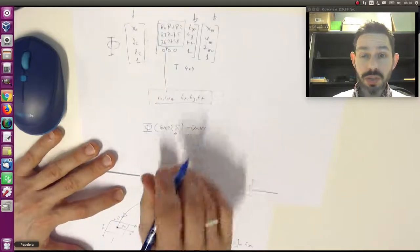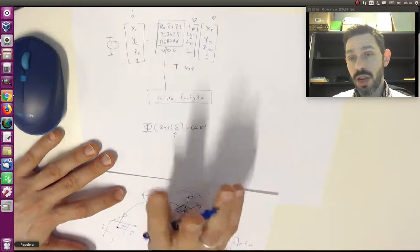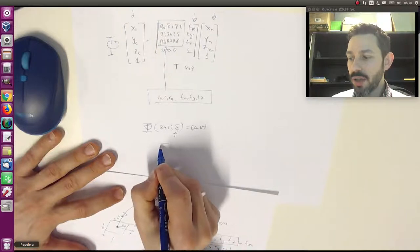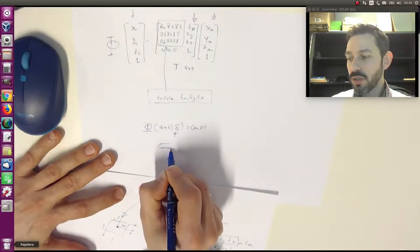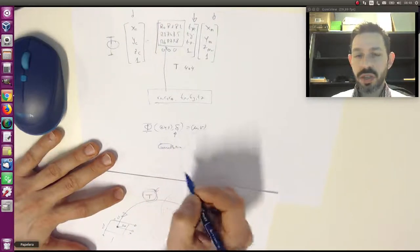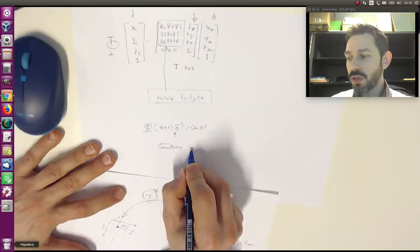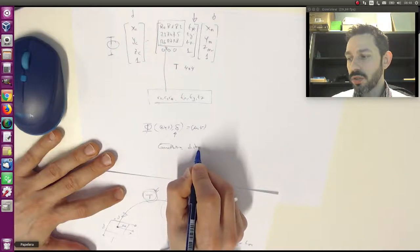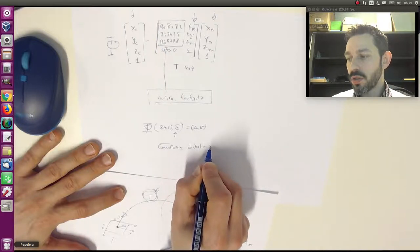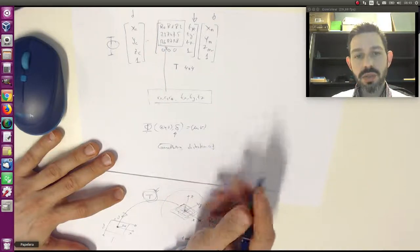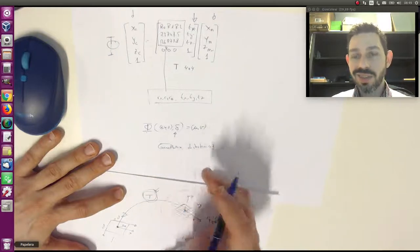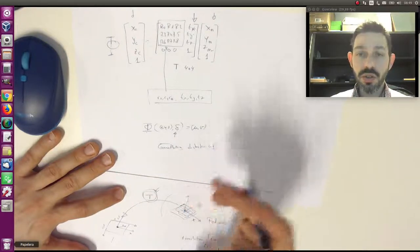In OpenCV, this is represented by two different elements. On one side, you have the camera matrix, which represent the optical center and focal length, and also you have the distortion coefficients, that represents the lens aberration, the distortion of your lens.